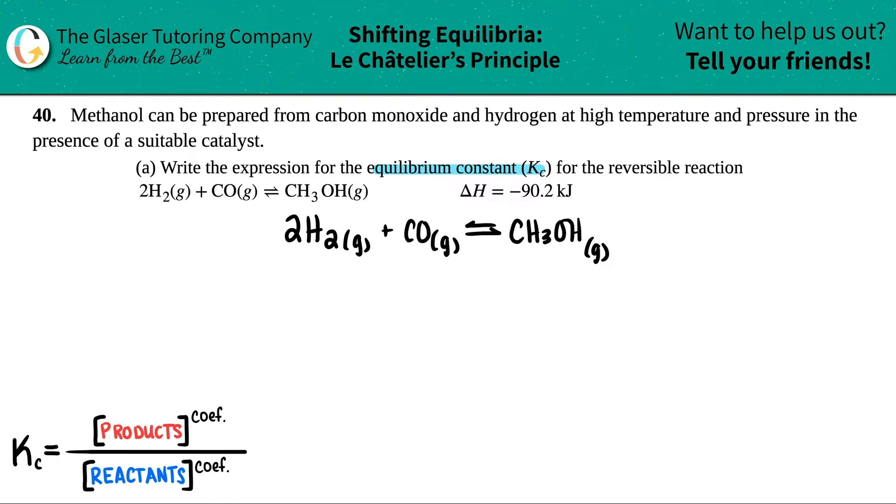And Kc or Kp or any of the Qs, it's always products divided by reactants. So in this case, let's get going. The Kc is going to equal something divided by something else. And it's always products divided by reactants.